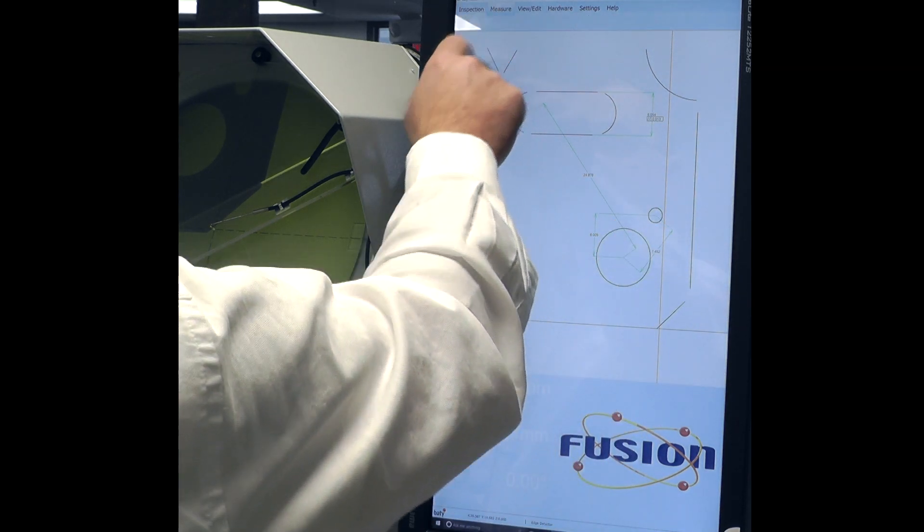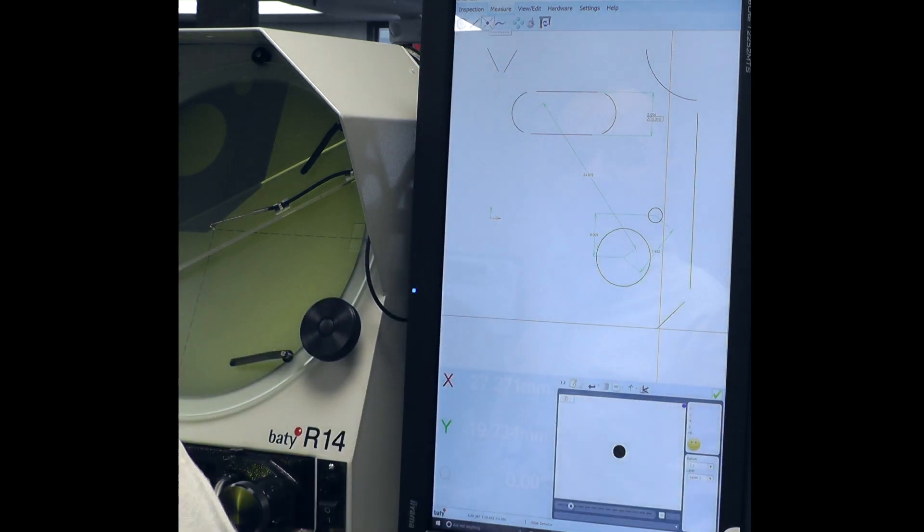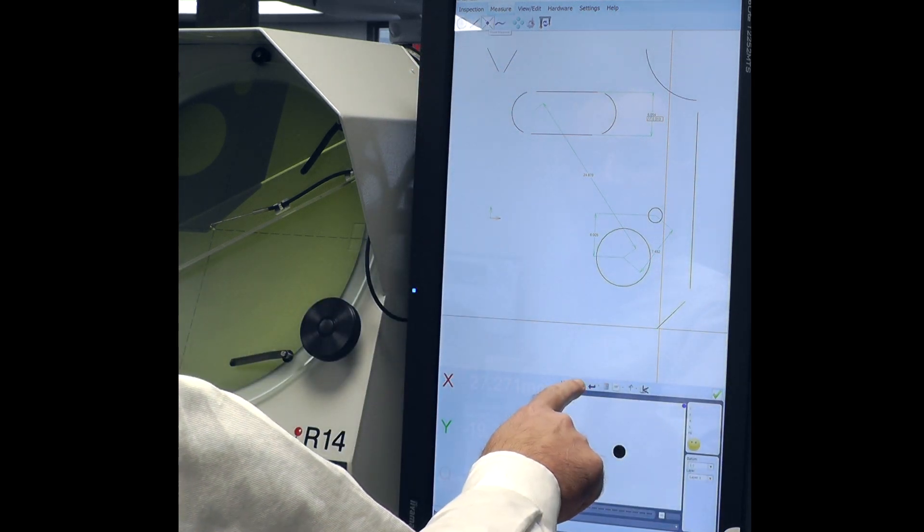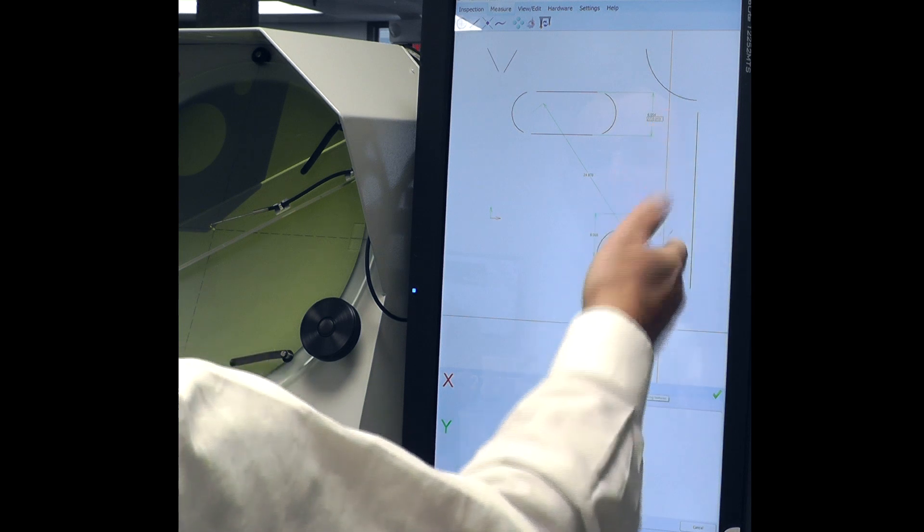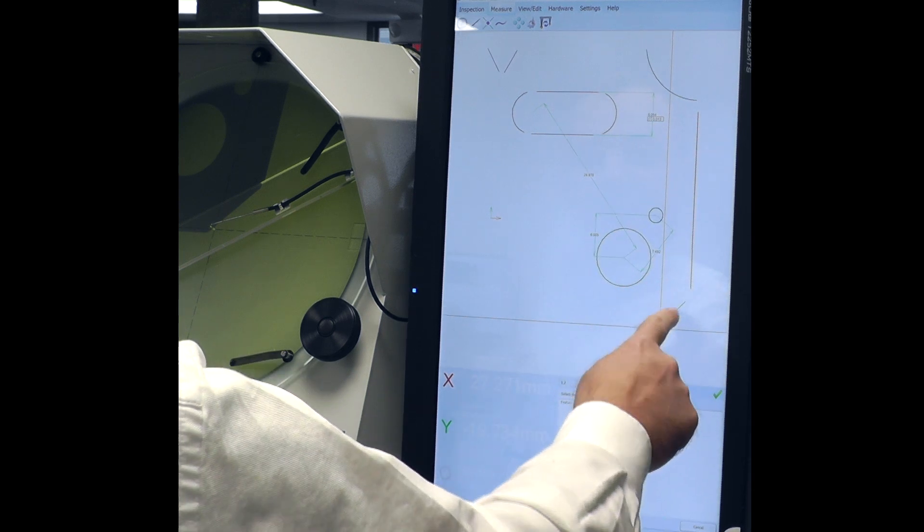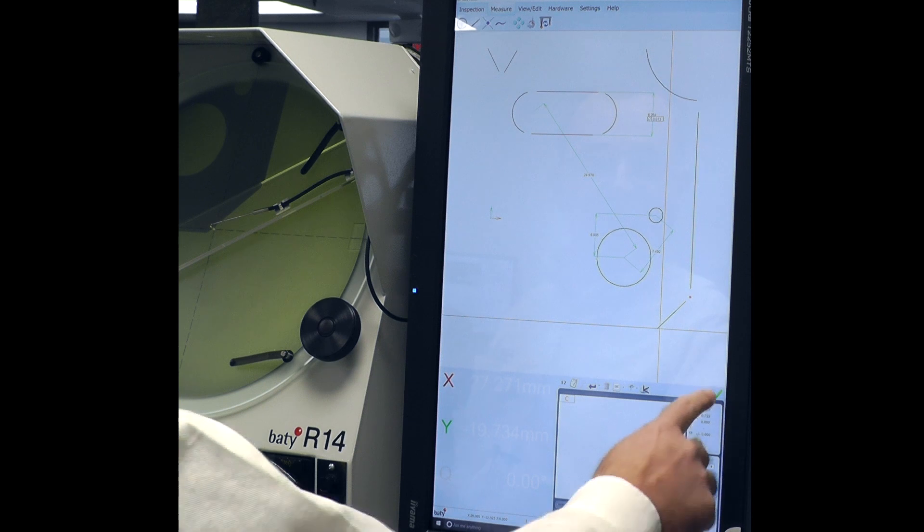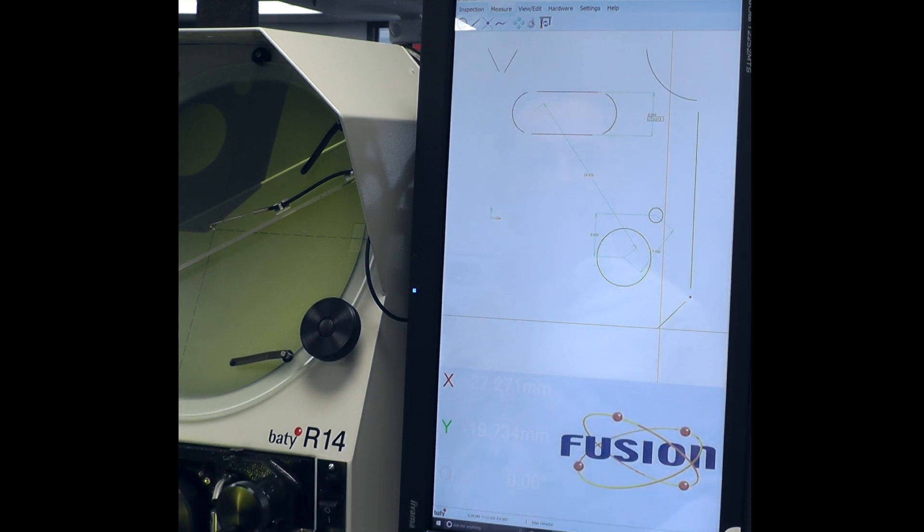So I select point in my measurement routine. And then I select the small wrench over here, which allows me to enter features to construct that point from. And as you can see, I have a point there. I say finish. I've done that point.